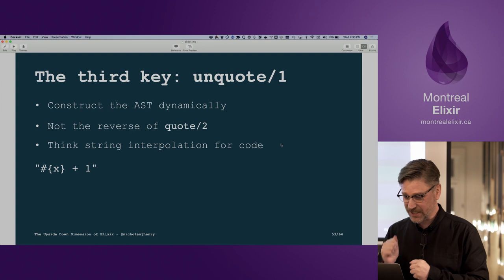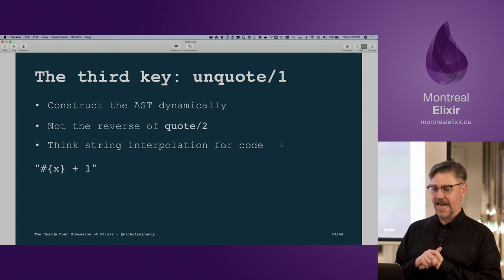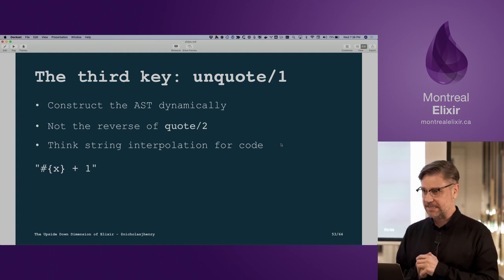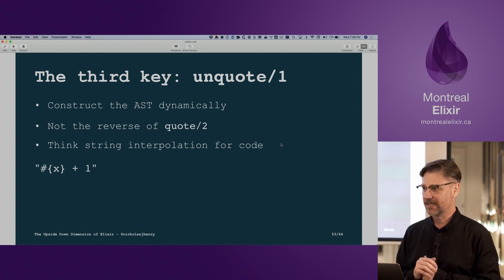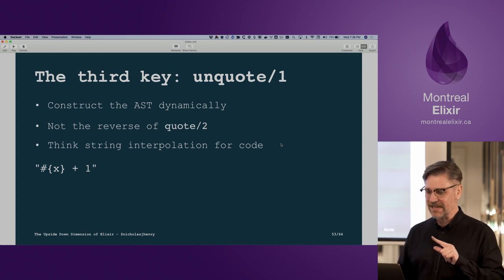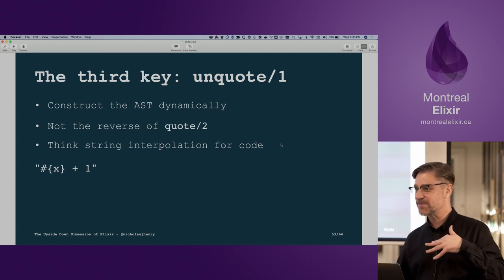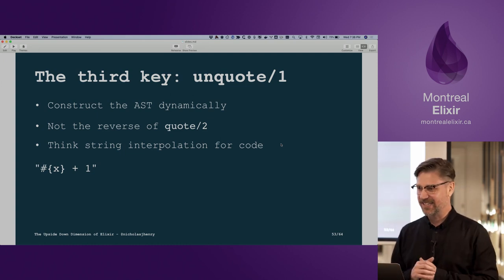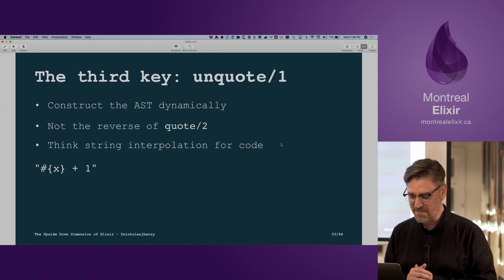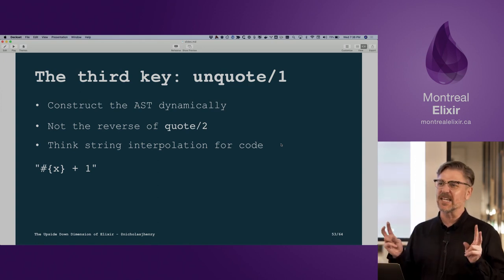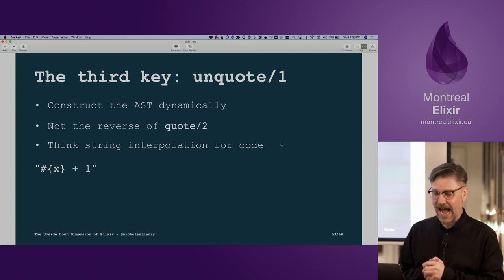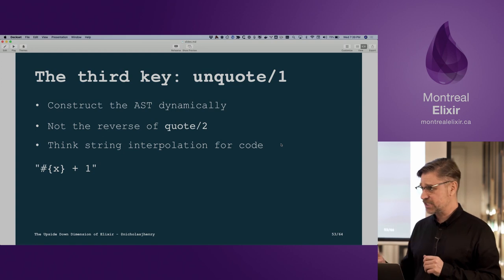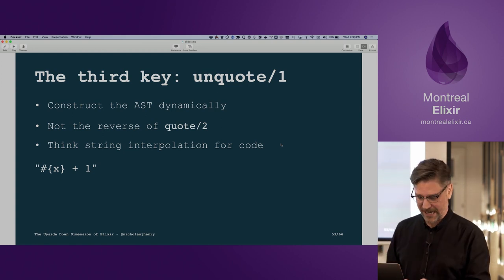Our final key is unquote. Unquote allows us to construct our AST dynamically. It's a bit of an odd name — you'd think unquote would be the reverse of quote. It's not; it's actually more useful. Maybe a better name would be 'inline'. Probably the easiest way to think about it is as string interpolation for code — and I'll demonstrate that.